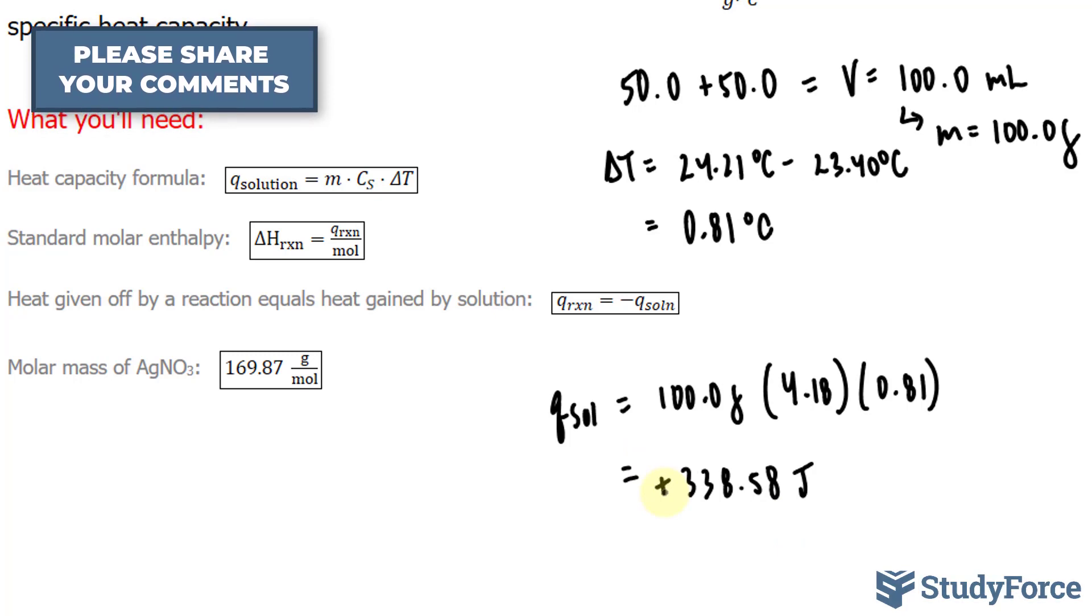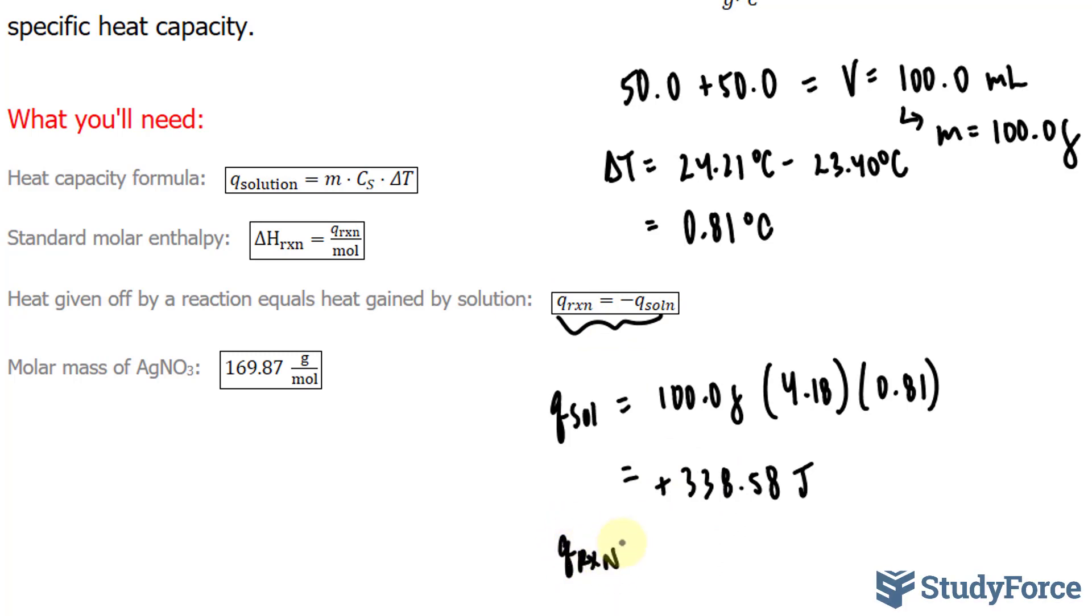What's interesting is that the amount of heat absorbed by the solution equals the heat given off by the reaction. The relationship is shown right here, where this number should be negative. So Q_RXN, the heat of the reaction, is negative 338.58 joules. The last thing we have to do is divide this by the number of moles of AgNO3.